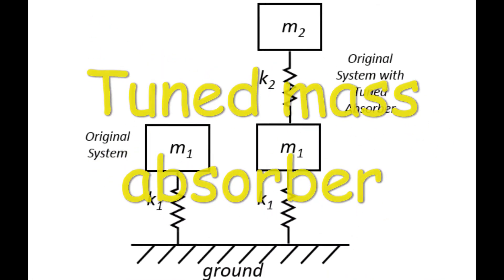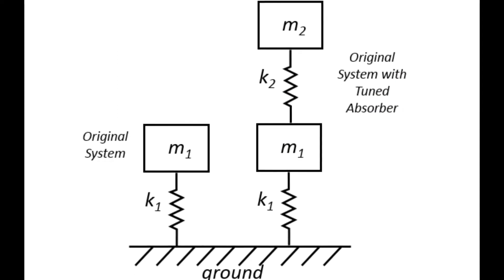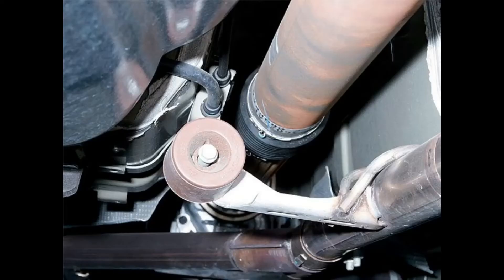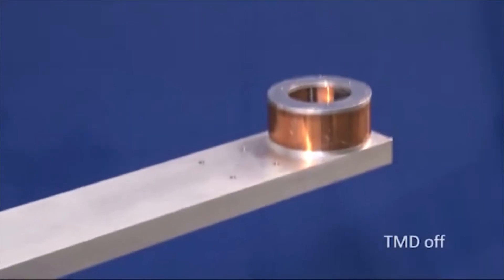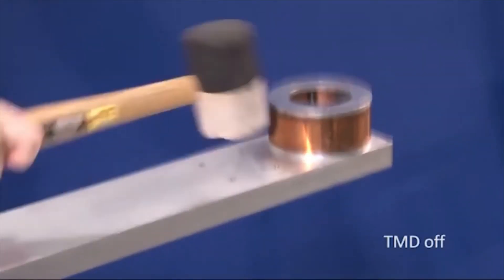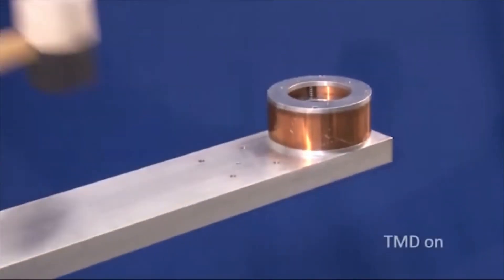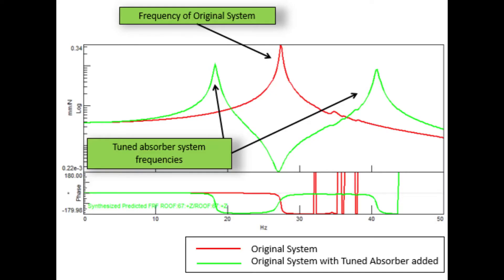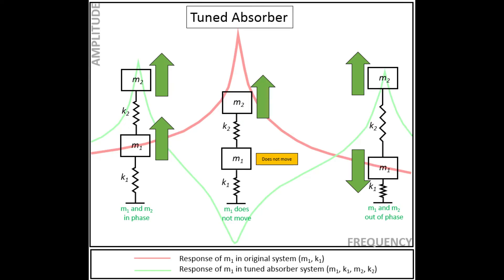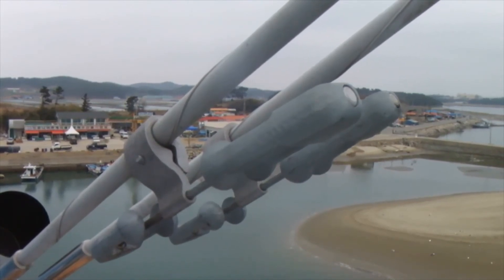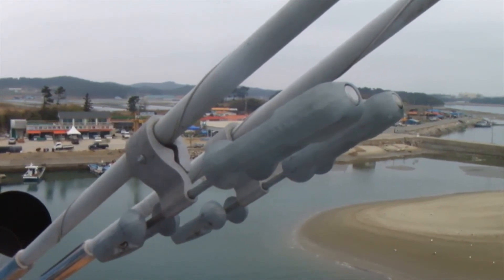Another way of reducing vibration at resonance is by using the passive technique called a tuned mass damper. A tuned mass damper modification is created by adding an additional mass-spring system tuned to the natural frequency of an existing system. A tuned mass absorber or damper, popularly called a TMD, brings two important changes to the original system: the original system's natural frequency is split into two, and at the initial natural frequency of the original system, the additional spring-mass-damper vibrates but not the original system.